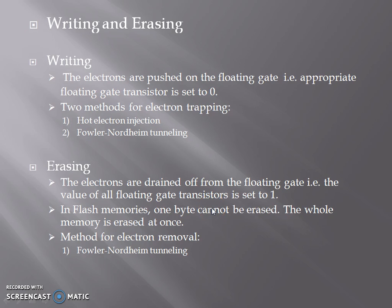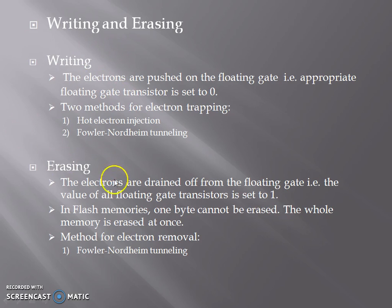Now, writing and erasing. In writing, the electrons are pushed onto the floating gate. It has two methods: hot electron injection and Fowler-Nordheim tunneling. Erasing is the opposite of writing — the electrons are drained off the floating gate, and this can be done using the method of Fowler-Nordheim tunneling.